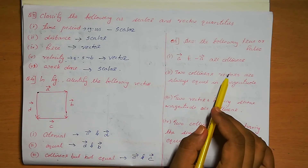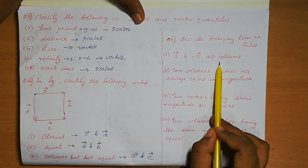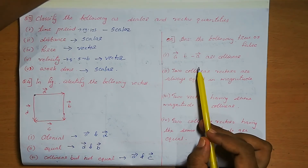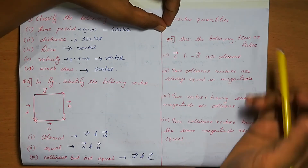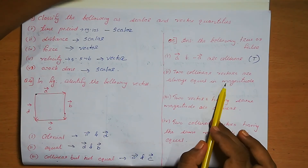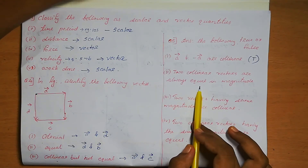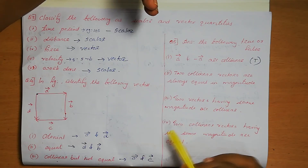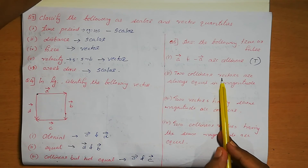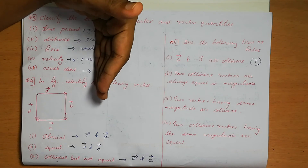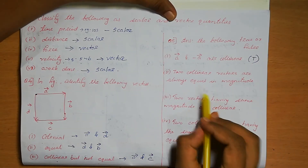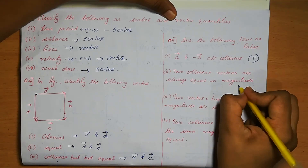Question number 5. Answer the following as true or false. First: vector A and minus vector A are collinear. Both are parallel to the same line, so this statement is true. Second: two collinear vectors are always equal in magnitude. Collinear vectors are those parallel to the same line; one can be smaller and the other bigger, so it is not necessary that they have the same magnitude. Therefore, this statement is false.